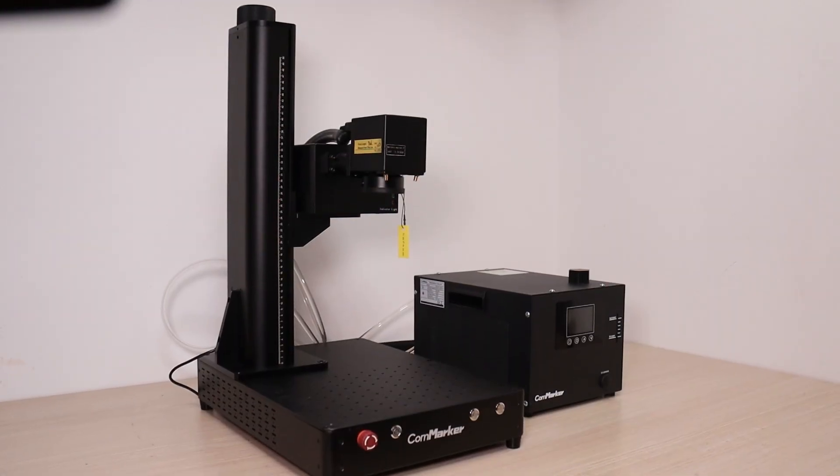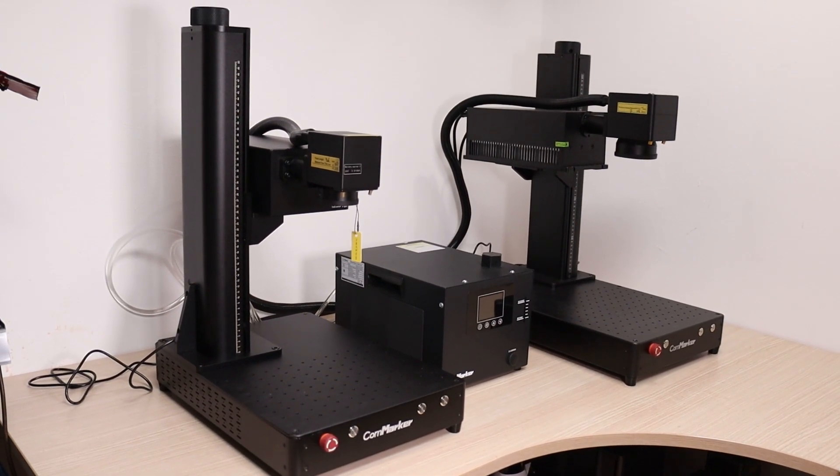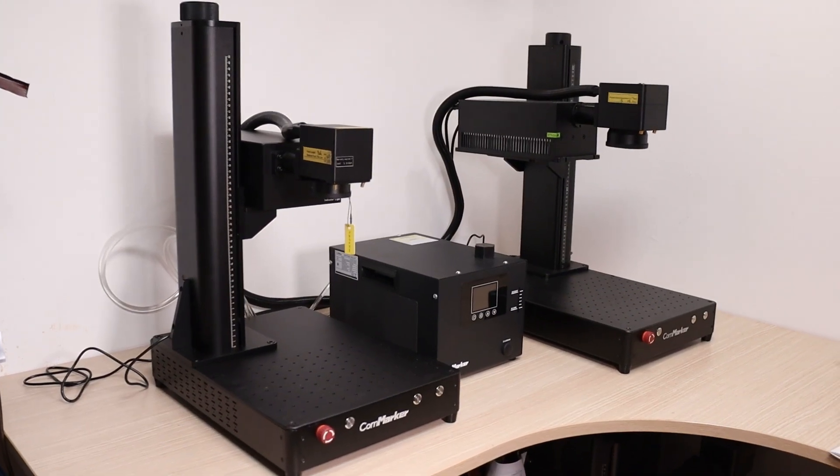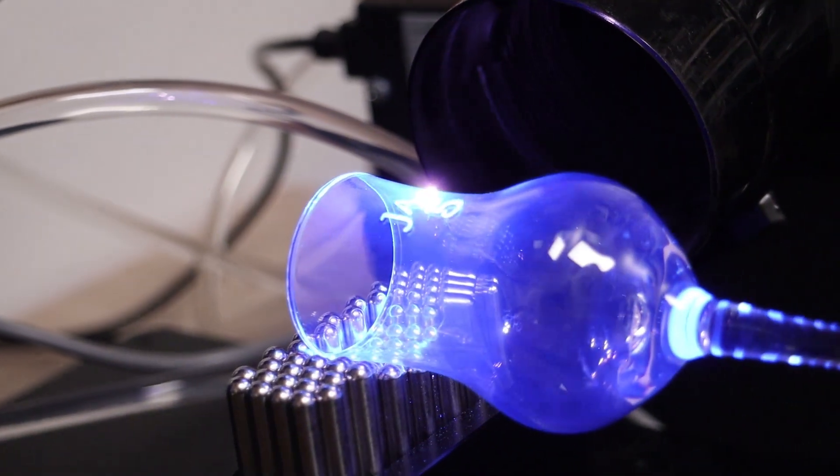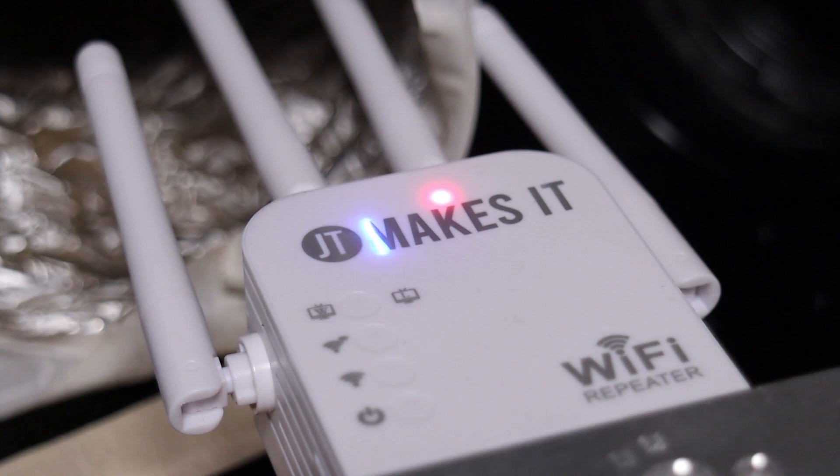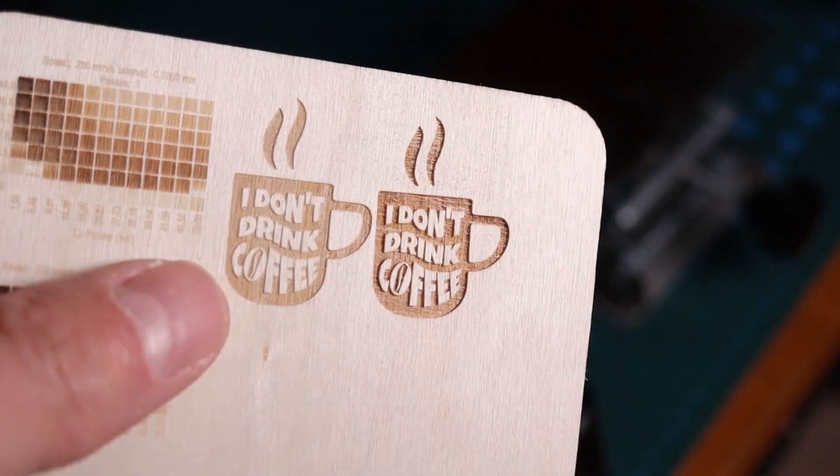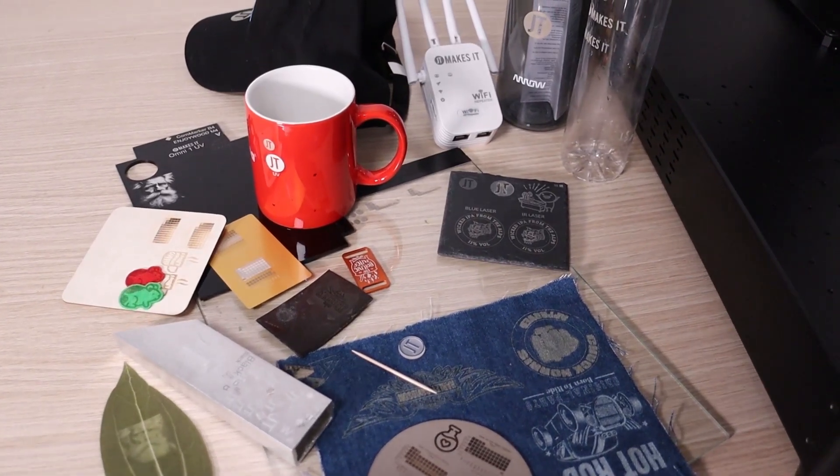In conclusion, the 10-watt CommMarker Omni is the better choice if you want to engrave faster, achieve deeper engraving effects, or work with more challenging materials like wine glasses or surfaces that are typically difficult to engrave or cut. However, if your primary focus is engraving plastics or similar materials, and you don't require the extra speed or power, the 5-watt version will serve you perfectly well.